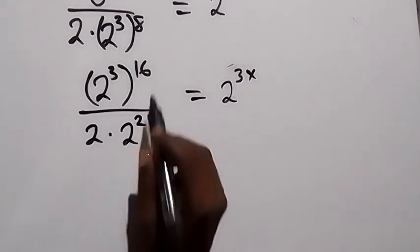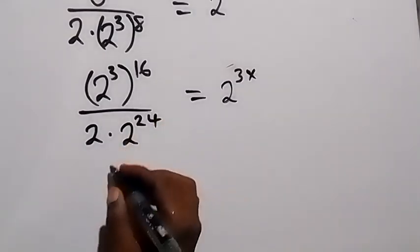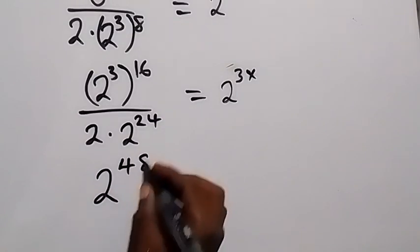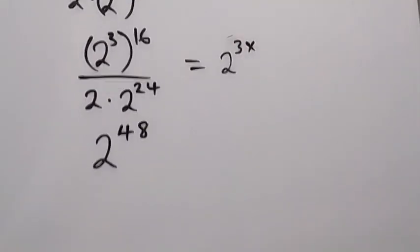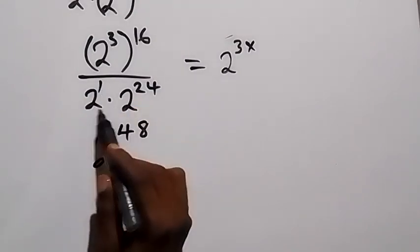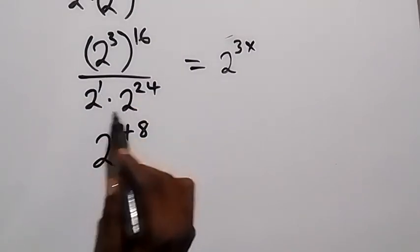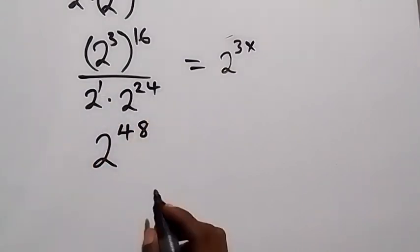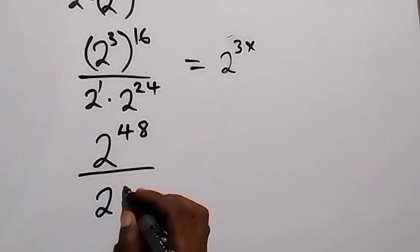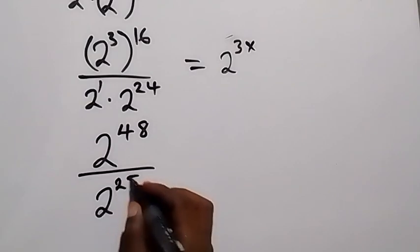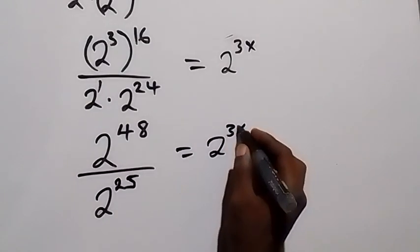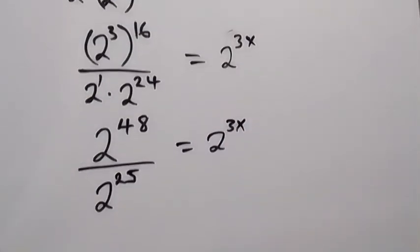We have 16 times 3, so that becomes 2 raised to power 48, divided by 2 raised to power 1 times 2 raised to power 24. Since the bases are the same, we add the powers in the denominator: 1 plus 24 equals 25, giving us 2 raised to power 25. This equals 2 raised to power 3x.